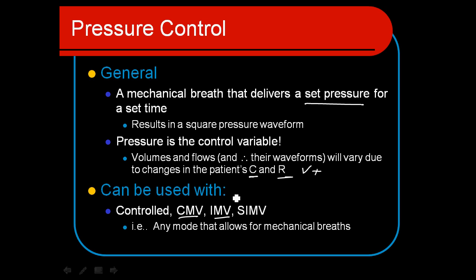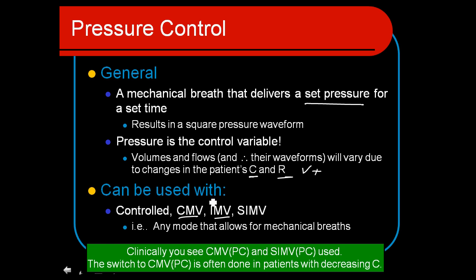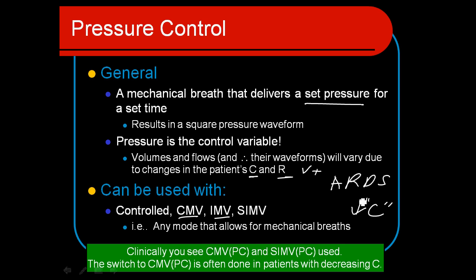With IMV we can allow some spontaneous breathing, giving us variety of control over how much work of breathing the patient does. In CMV the goal is to minimize the amount of ventilation the patient performs. This mode focuses on patients with generally low compliance, and we want to apply lung protective strategies often associated with ARDS — adult respiratory distress syndrome.